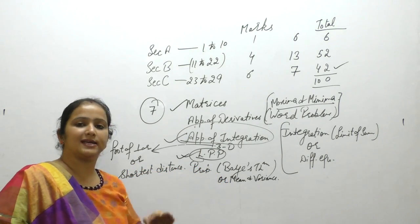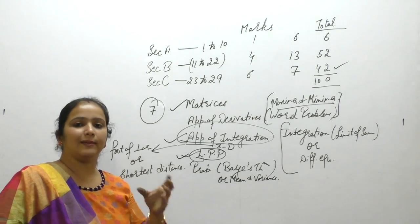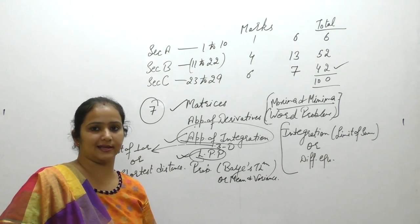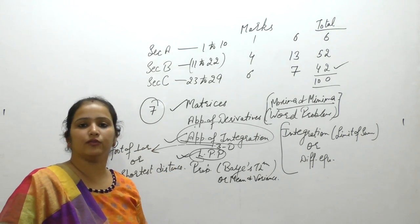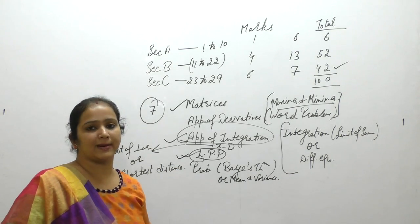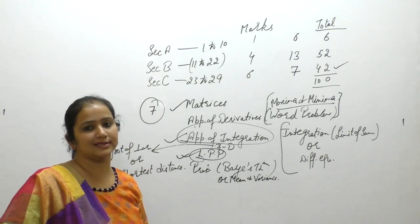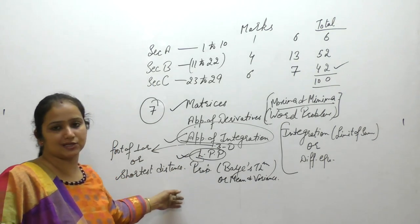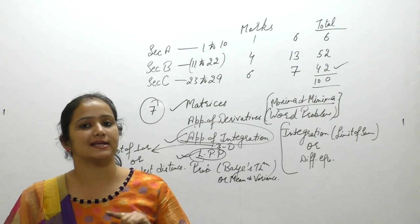For revision, first revise all formulas from all chapters — wherever you have noted them in one notebook, revise those every day. After that, start doing Section B questions from previous year question papers. Take 10 years of papers and start solving Section B questions, then Section A. In the exam also, you should start first with Section C.